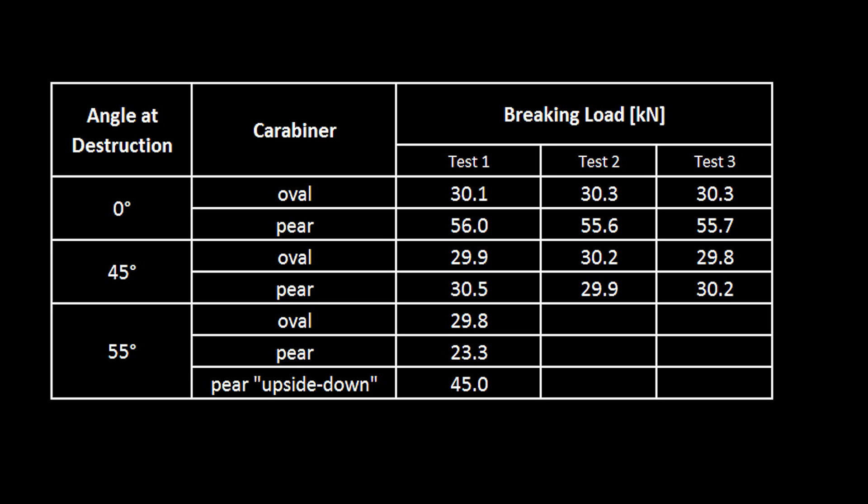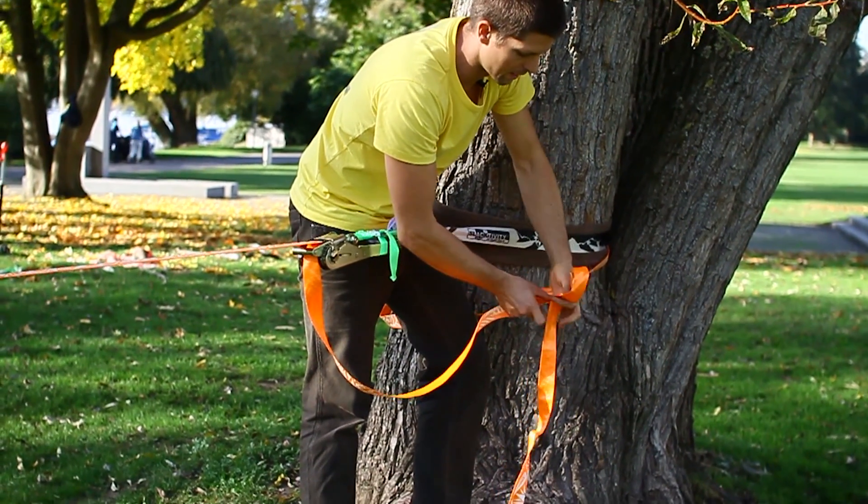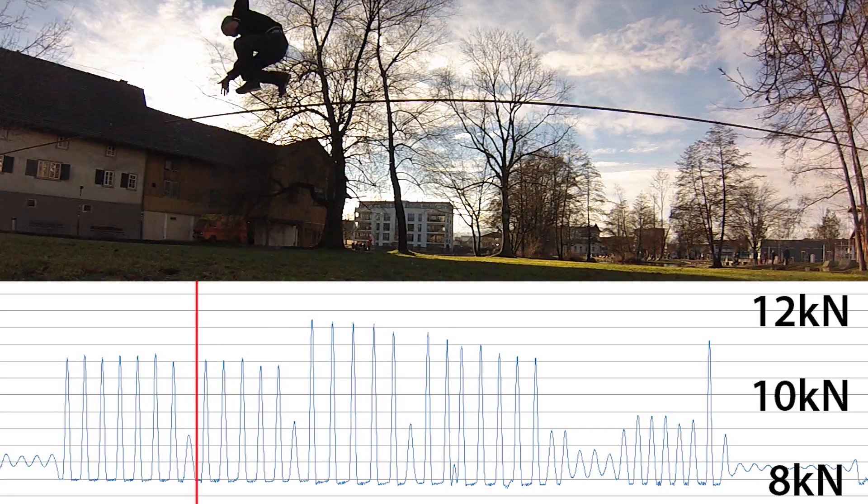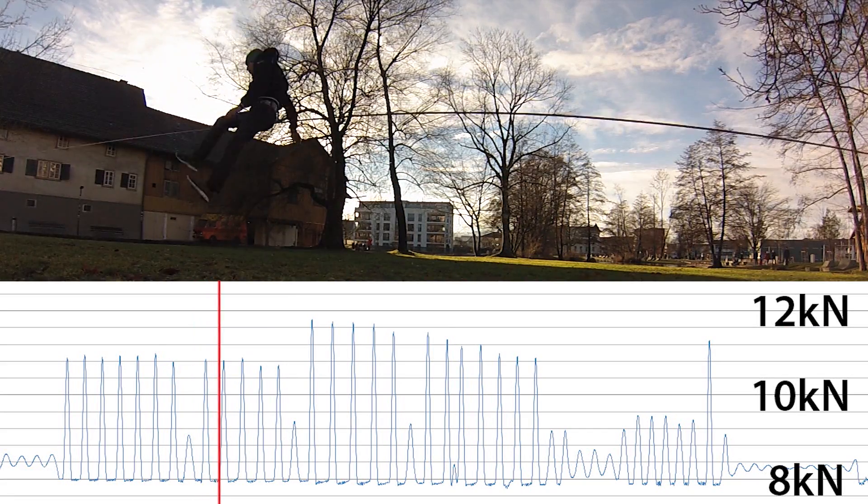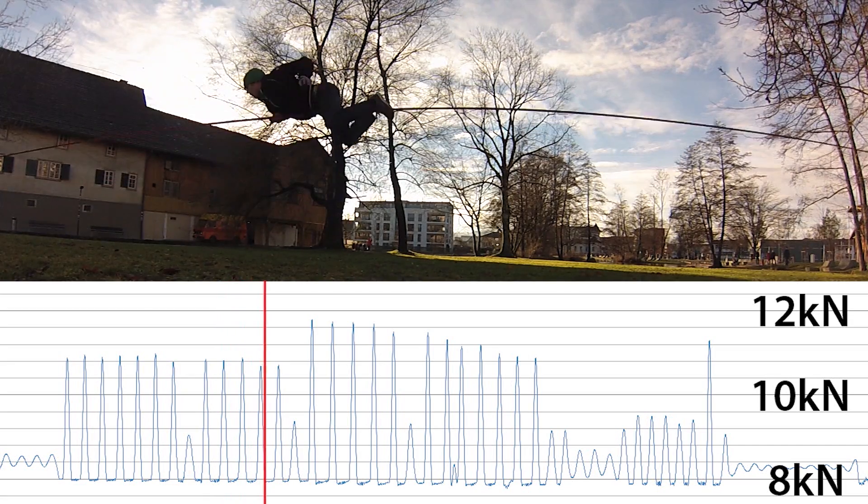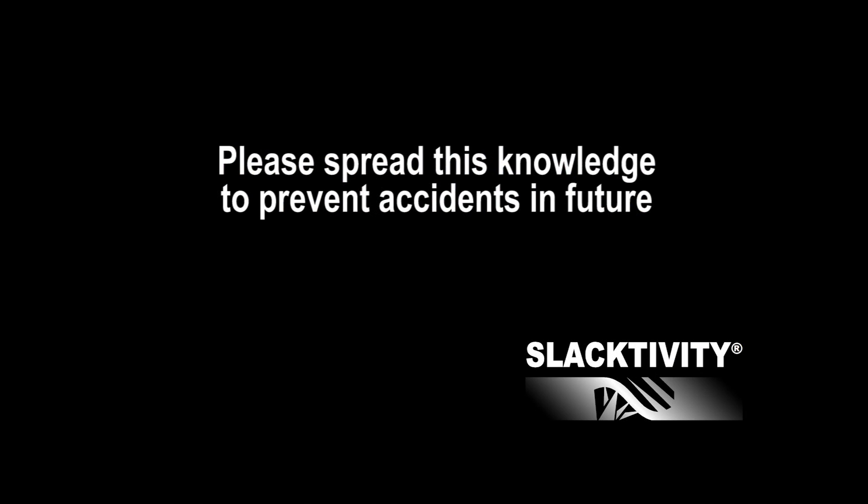However, the safest option under high loads is still to use a strong shackle. Whatever your choice is, always make a backup so that no metal pieces can fly through the air. And be aware that under repetitive load conditions, like it for example occurs in slacklining, the carabiner will be weakened a lot. Please spread this knowledge to prevent accidents in future.